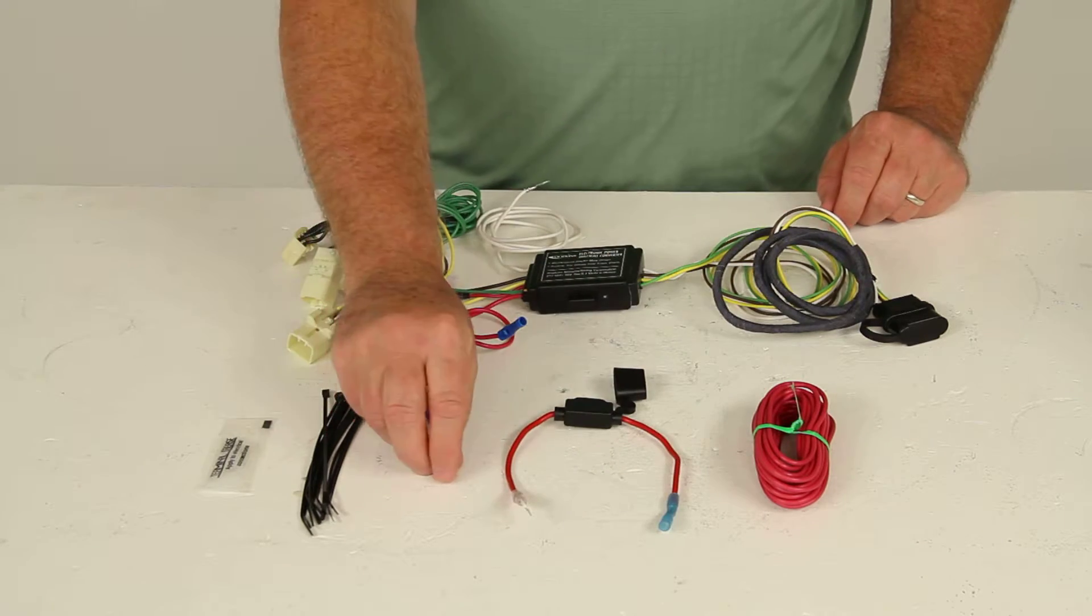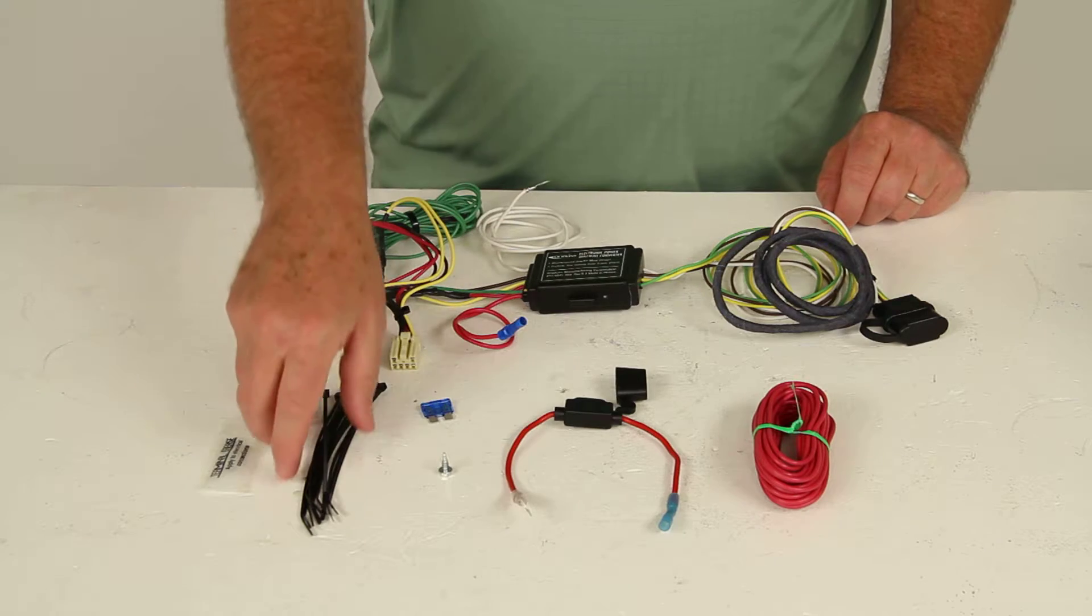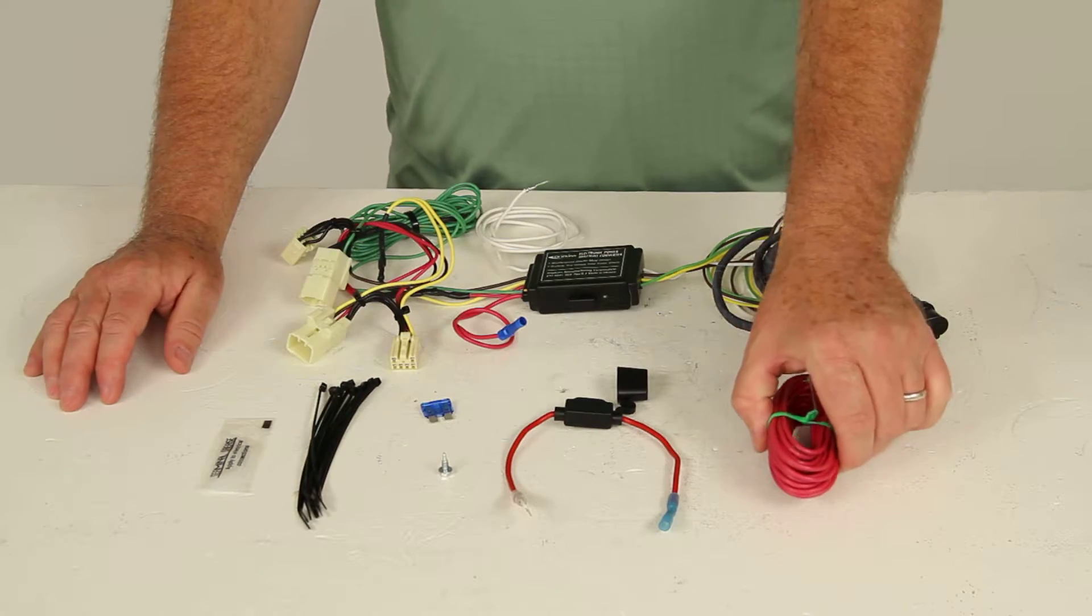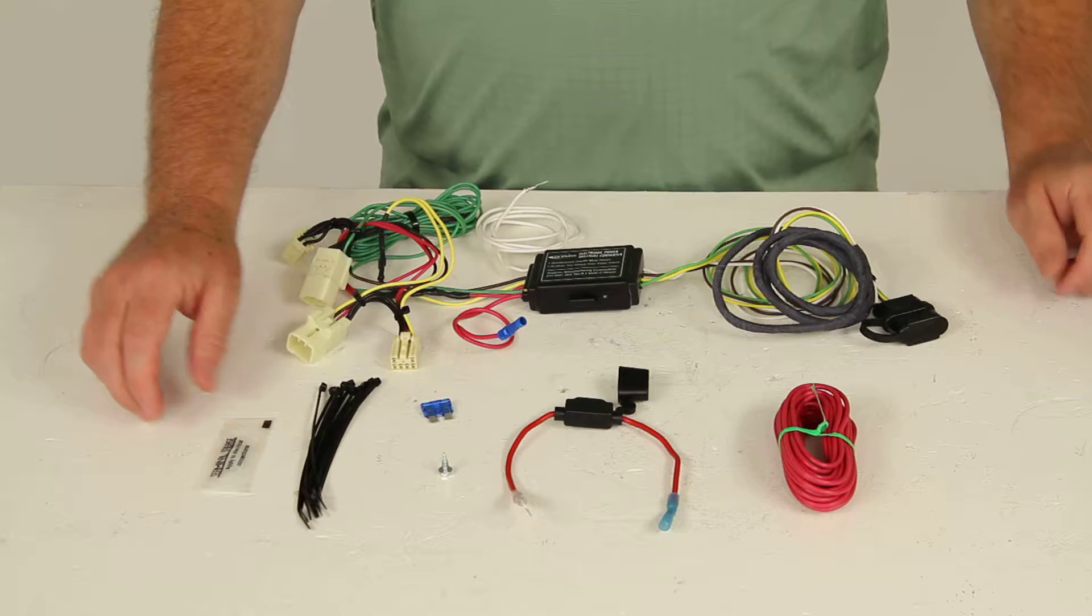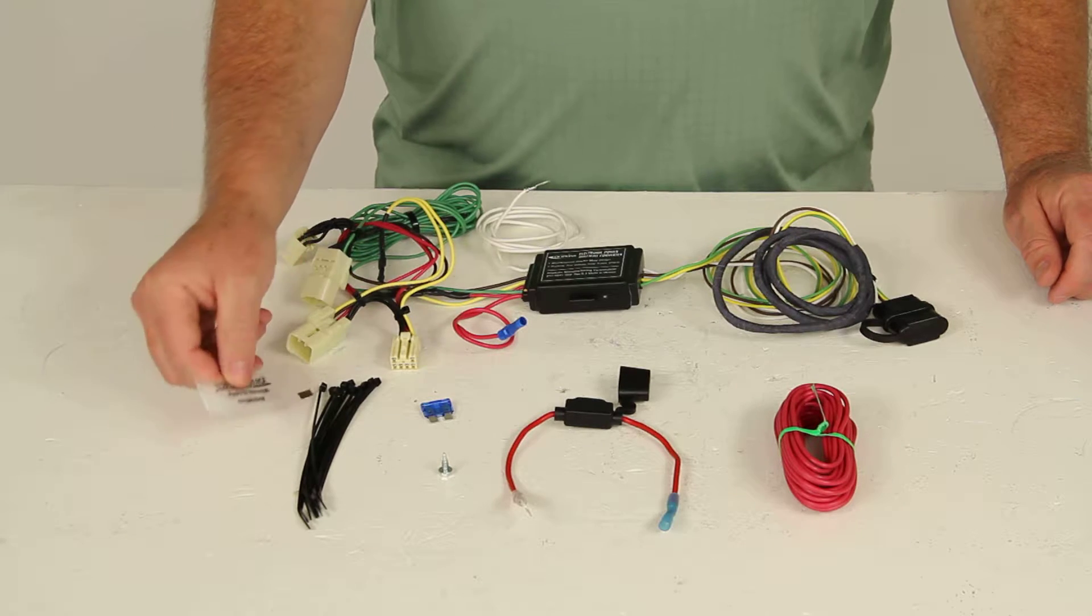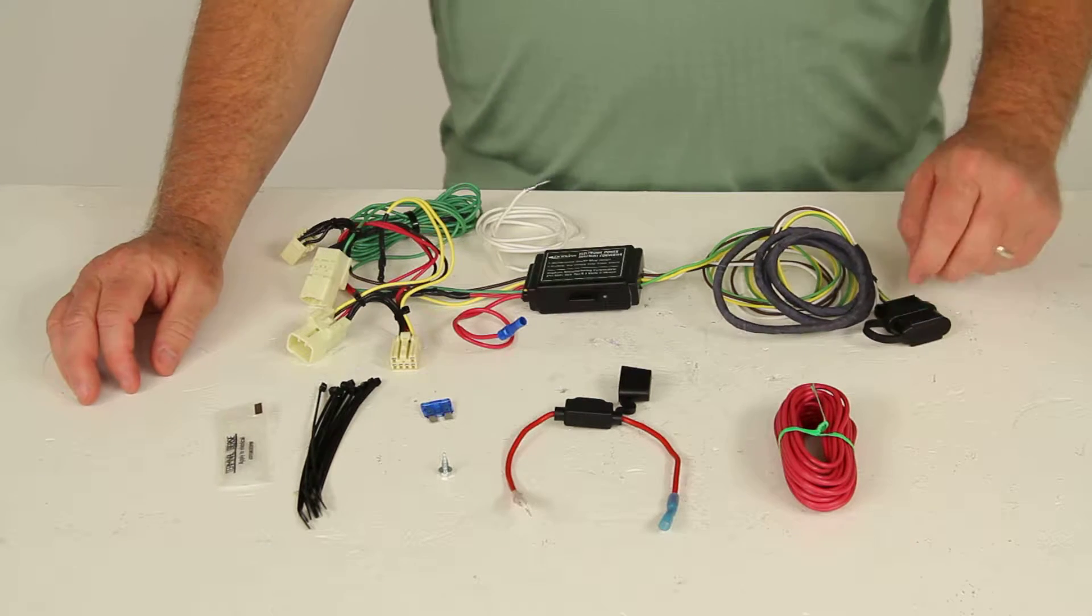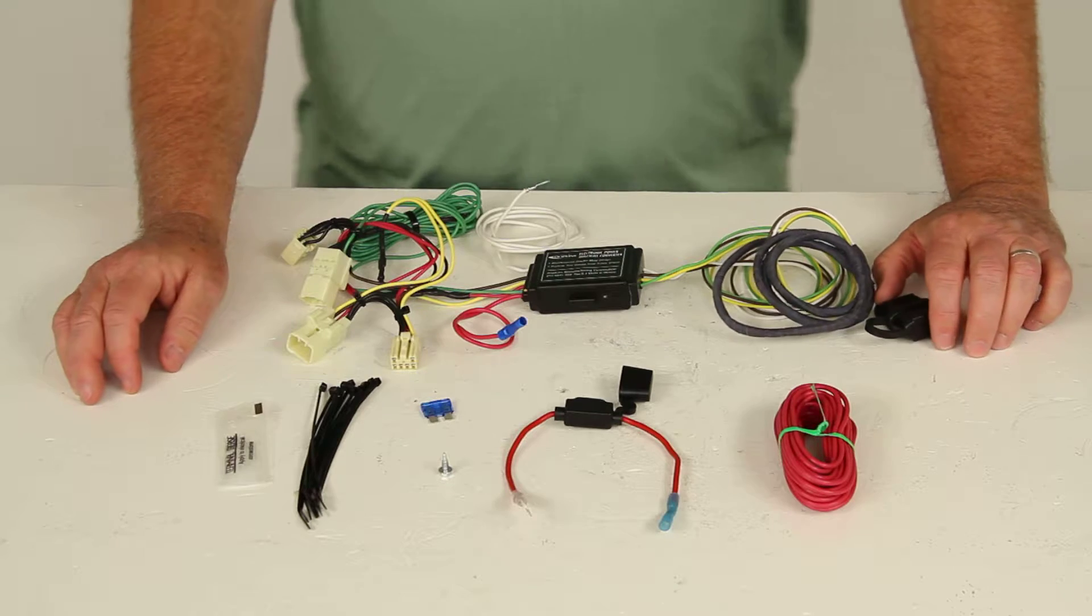Comes with a ground screw for when you're grounding the white wire. It comes with zip ties to take up any slack of the wires if you need to, and it comes with a nice packet of dielectric grease which would be used on the terminals here when you plug in your trailer.